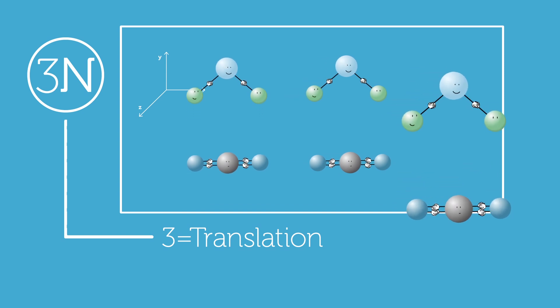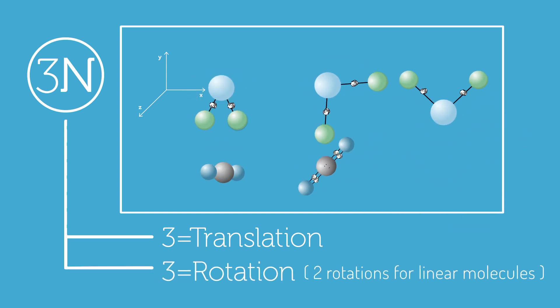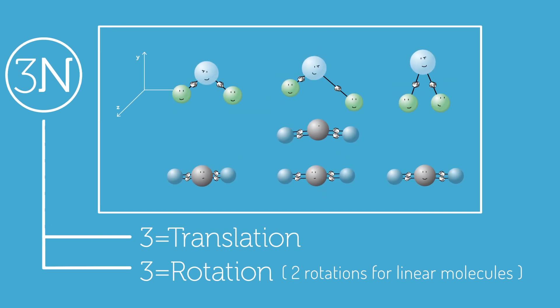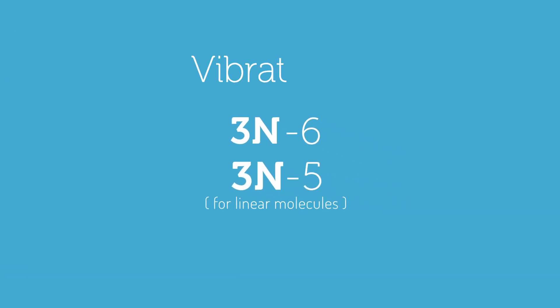Three of the total correspond to translation, when all the atoms are going in the same direction. And three, or two for linear molecules, correspond to rotations. All the rest, 3n-6 or 3n-5 for linear molecules, are vibrations.